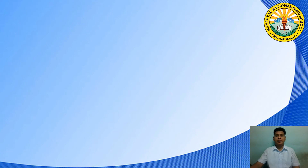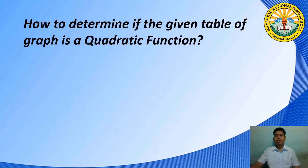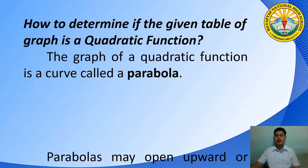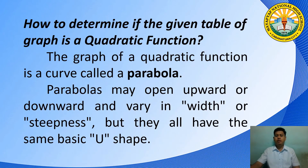We are done in determining quadratic functions given an equation or table of values. How about if the given is a graph? Remember in grade 8, the graph of a linear function is a line. Now, if we have a quadratic function, the graph is not called a quad or quadruid. The graph of a quadratic function is a curve called a parabola. Parabolas may open upward or downward and vary in width or steepness, but they all have the basic U shape.